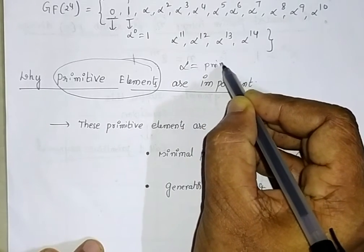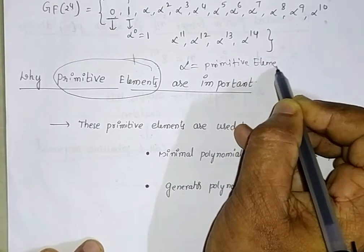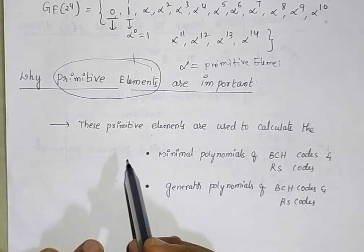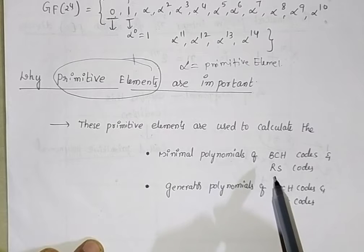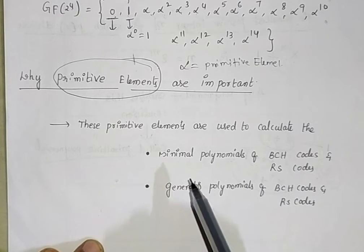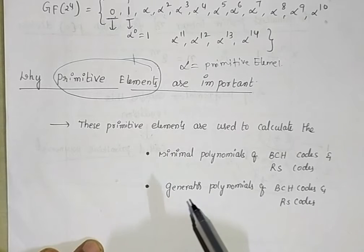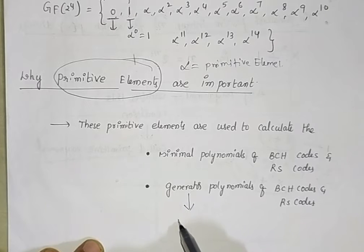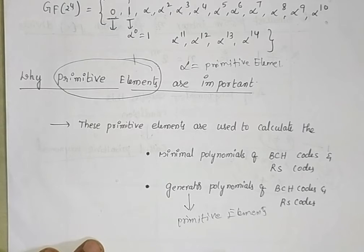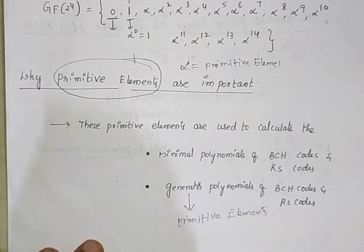Alpha is the primitive element. These primitive elements are very important because they are used to calculate the minimal polynomial of BCH codes and RS codes. In order to construct the generator polynomial for BCH codes and RS codes, we must know the basic concepts of primitive elements. That is why we introduce primitive elements in the Galois field.